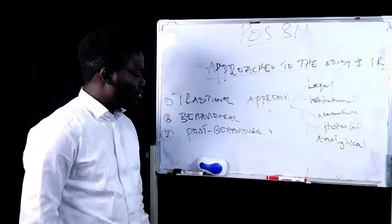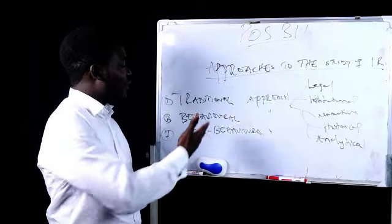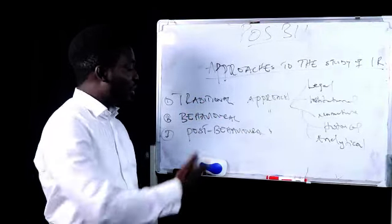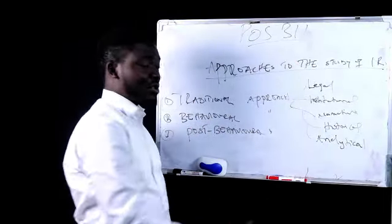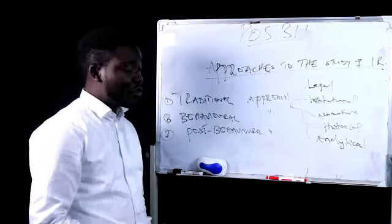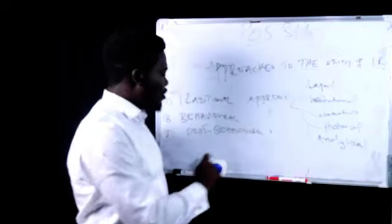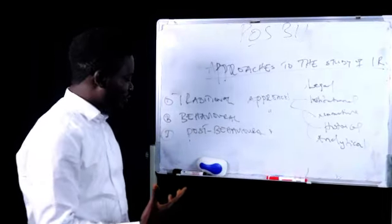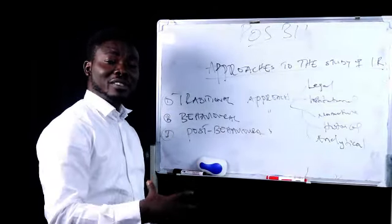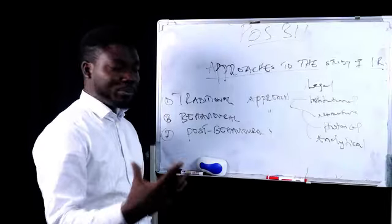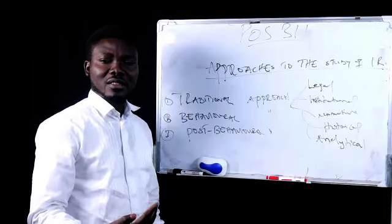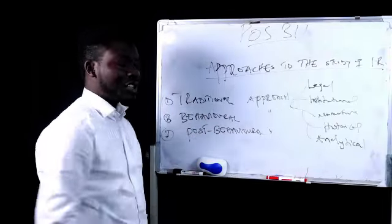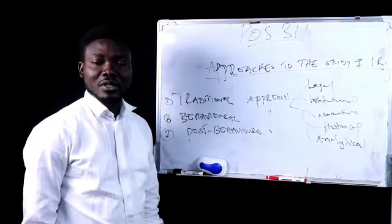The last approach is the post-behavioral approach. Remember, the fact that the traditional approach is not scientific does not mean it has lost its potency — it is very important and all approaches under it remain potent even in the 21st century. The post-behavioral approach is a blend of the traditional approach and the behavioral approach, making it a holistic approach that employs normative, institutional, historical, and legal approaches, plus the empirical approach, to understanding international politics. To be a good analyst, one must be able to apply each of these approaches in examining global politics.